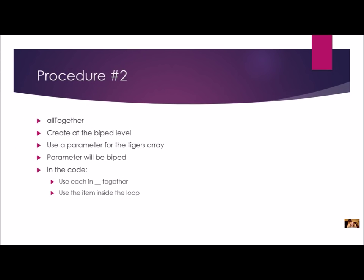Now we're ready for procedure number two — we're going to call it 'allTogether'. Once again we're going to create this at the biped level, with a parameter for the tigers array of type biped. This procedure is going to be very similar to the last one. The only difference is we're going to use 'each in together' instead of 'for each in', and I must use the item inside the loop.